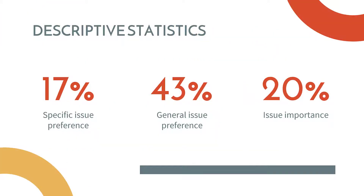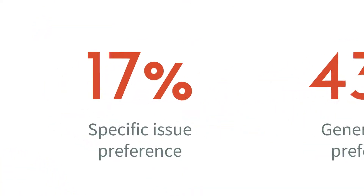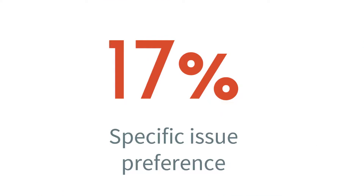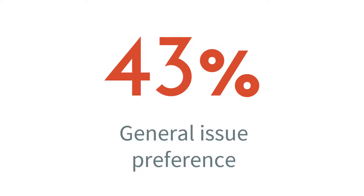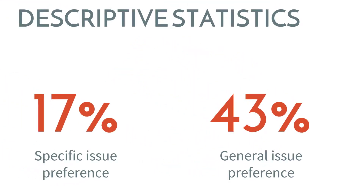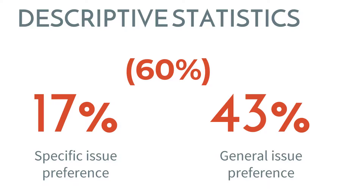Here are some critical descriptive statistics based on the polling data Burstein was able to collect. He was able to find specific issue preference for 10 of the proposals in his dataset, representing 17 percent. He also found general issue preference data available for another 26 proposals — an additional 43 percent. So right there he has some kind of issue polling available for a total of 60 percent of the proposals in his sample.